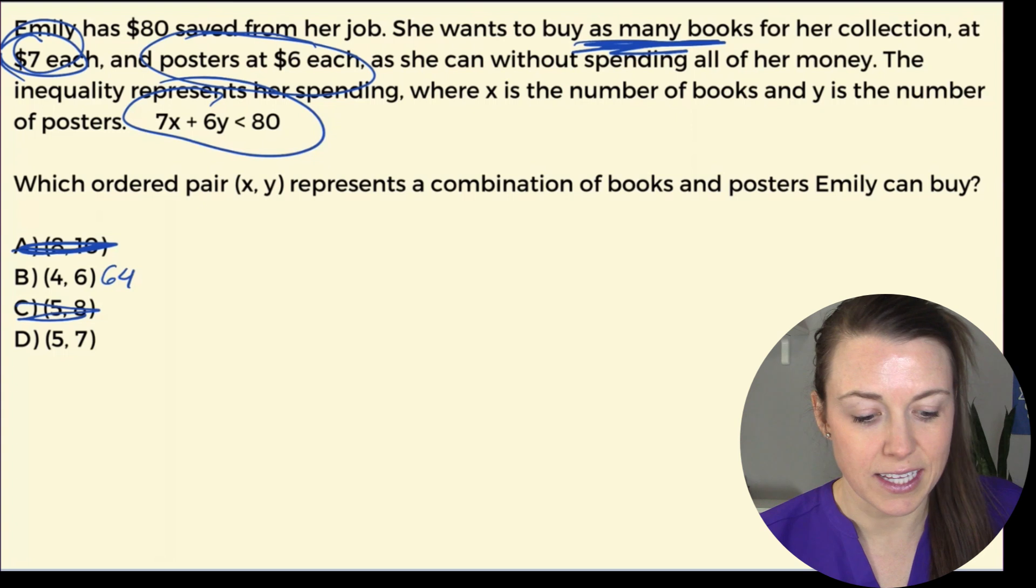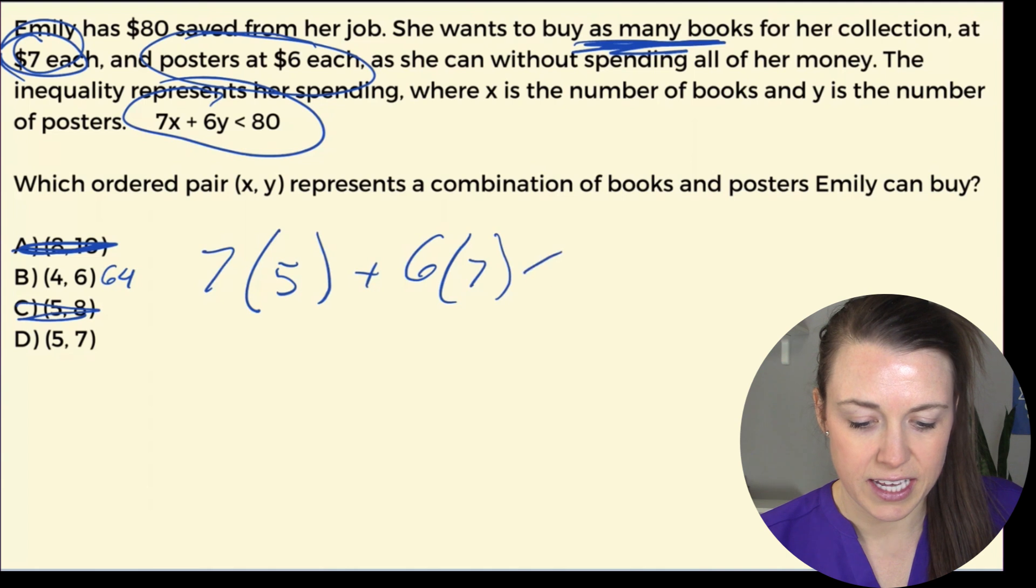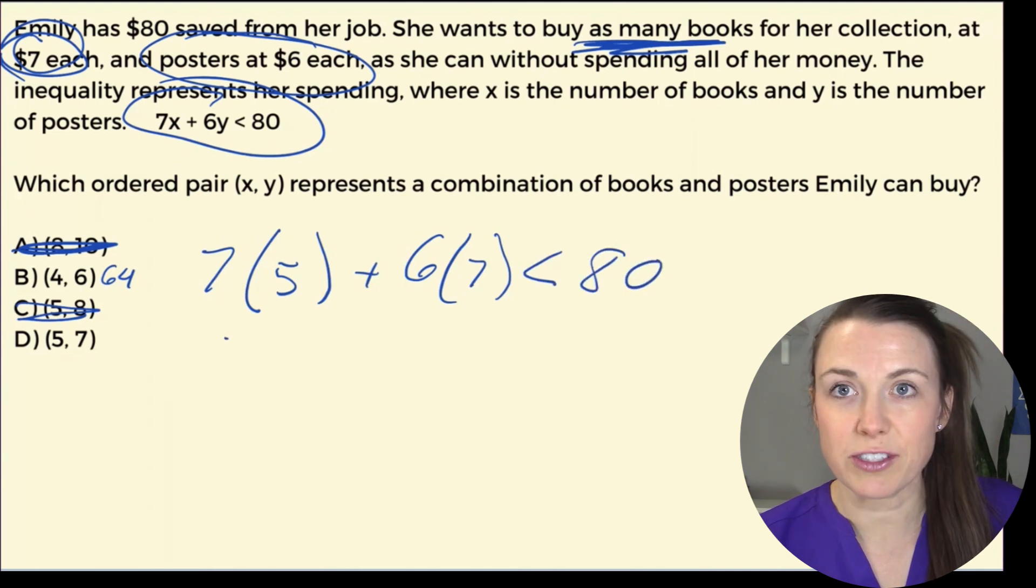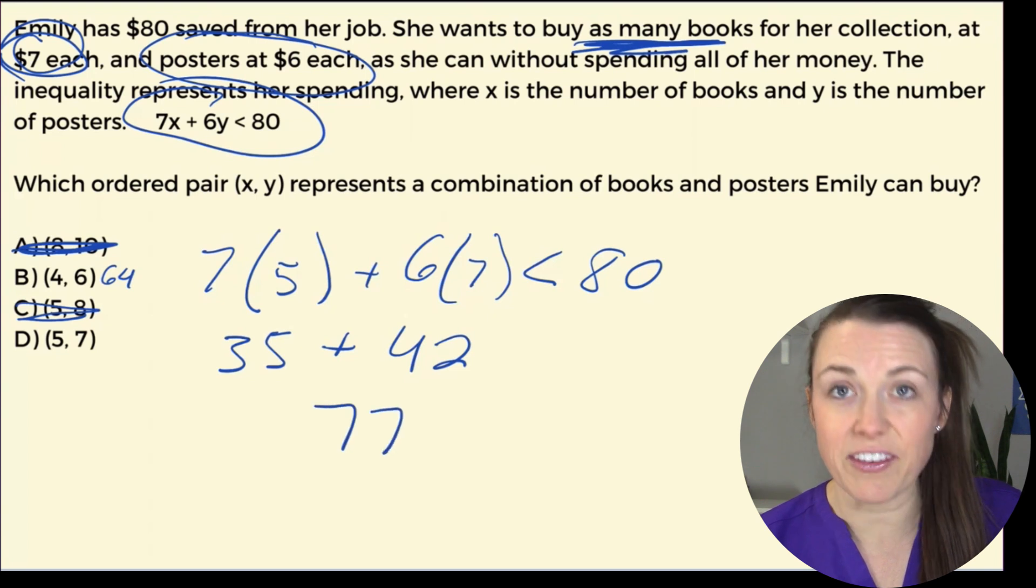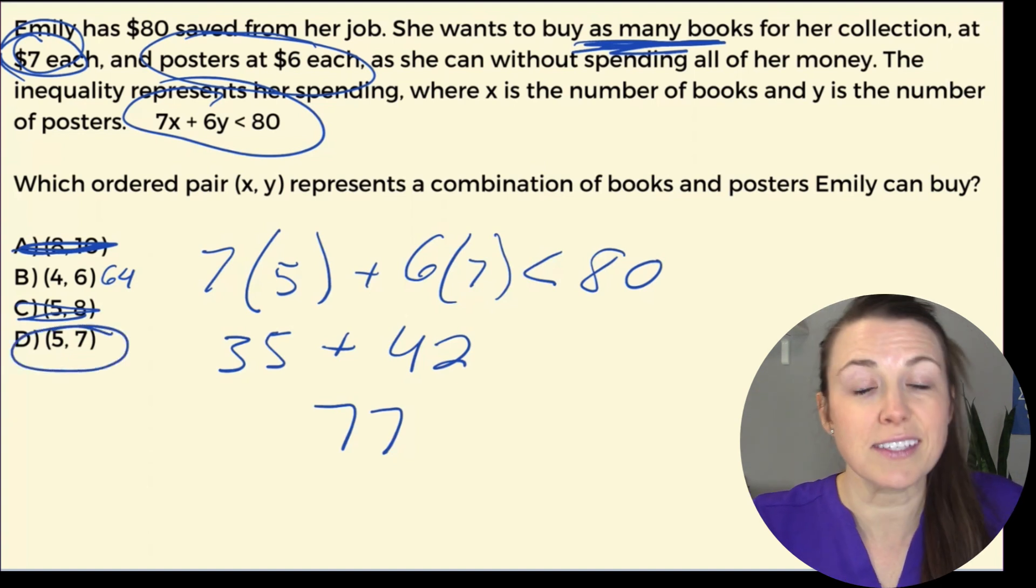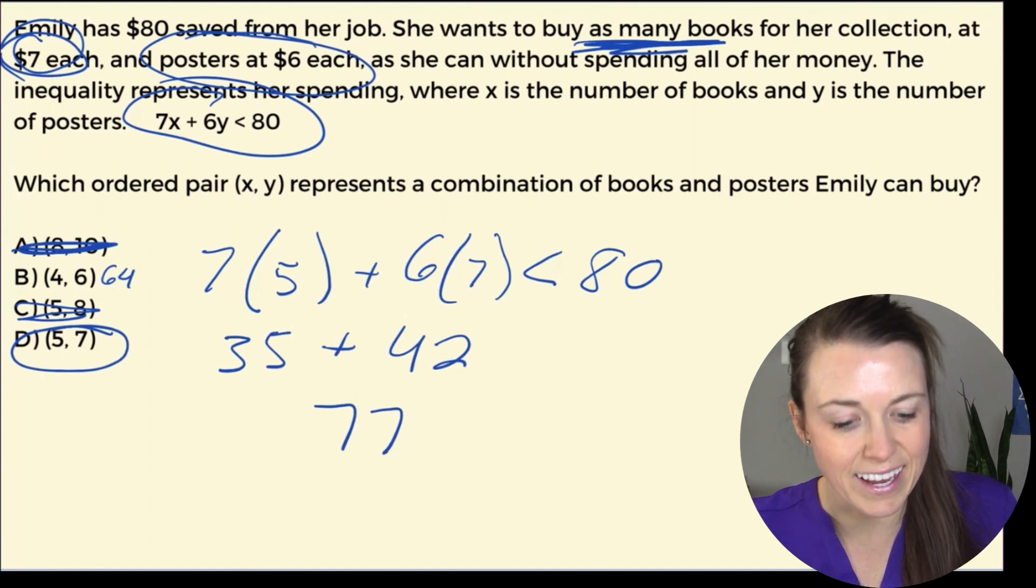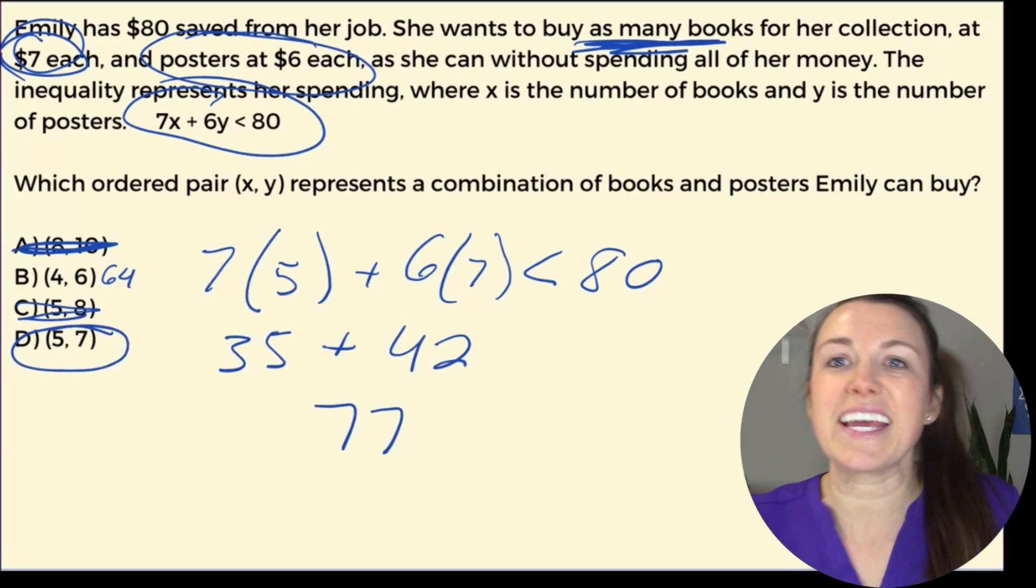And our last one, D. Let's see if it's a little bit closer to 80 than our B was. I have 7 times 5 plus 6 times 7 is less than 80. 7 times 5 is 35, and 6 times 7 is 42. Let's add those up and what do we get? 77. Is 77 less than 80? Yes it is. That means that D is the answer because it's a little bit closer to 80 than our 64 with B. So D is the answer.